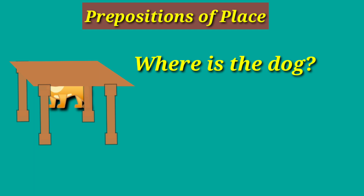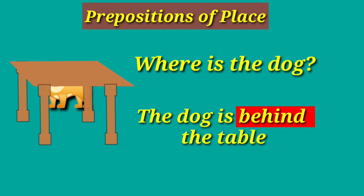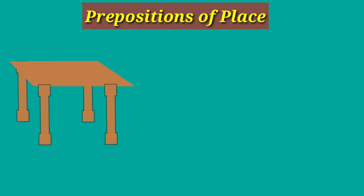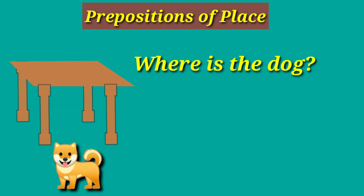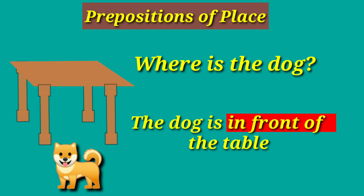Where is the dog? The dog is behind the table. Where is the dog? The dog is in front of the table.